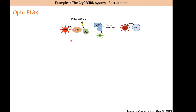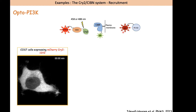Here are some examples of using this CRY2/CIBN system in cell biology. The first example is recruitment of protein — specifically, an optogenetic probe for PI3-kinase. The authors targeted the CIBN protein tagged with GFP to the plasma membrane using a CAAX motif, and fused the iSH2 domain from p85 to CRY2. This iSH2 domain is able to recruit PI3-kinase and activate its activity. The authors also fused the PH domain of AKT — which reflects PI3-kinase activation — with an RFP reporter.